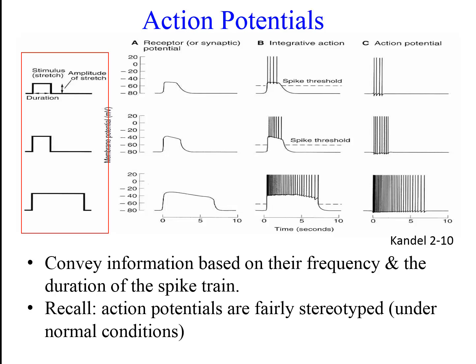Recall that action potentials are fairly stereotyped under normal conditions. A typical action potential is about 1 to 10 ms in duration and about 70 to 110 mV in amplitude. Thus, action potentials are not graded and do not normally vary in their amplitude or duration. They therefore need another mechanism to code information. So instead of grading their amplitude and duration, action potentials convey information based on their frequency and the duration of the spike train — the period of time over which the cell is producing action potentials. This is determined by the amplitude and duration of the graded potentials: the higher the amplitude of the graded potential, the higher the frequency of action potentials; the longer the duration of the graded potential, the longer the duration of the spike train.